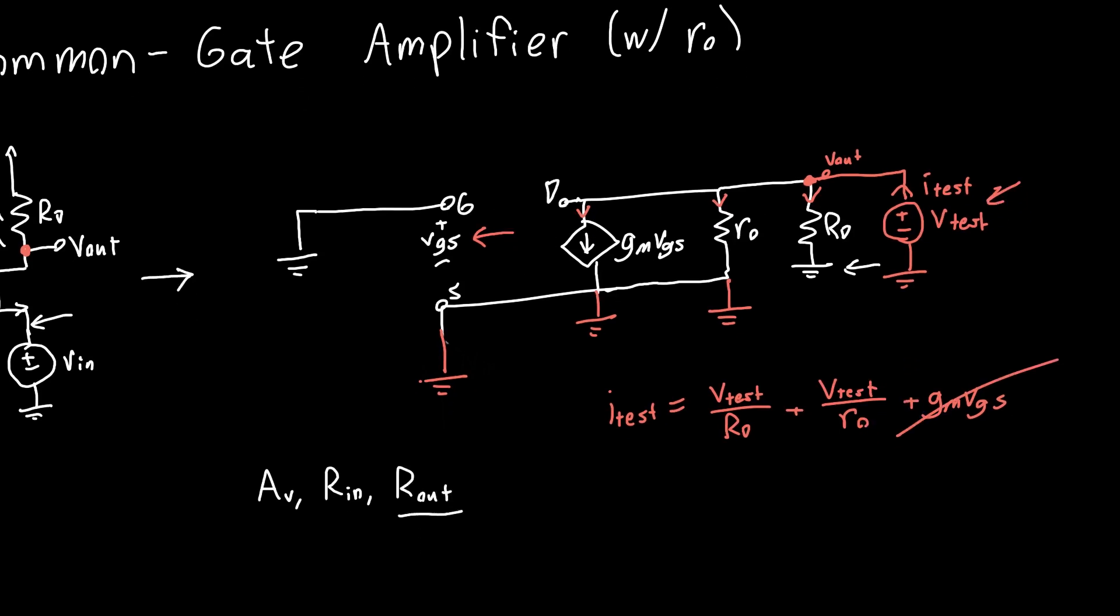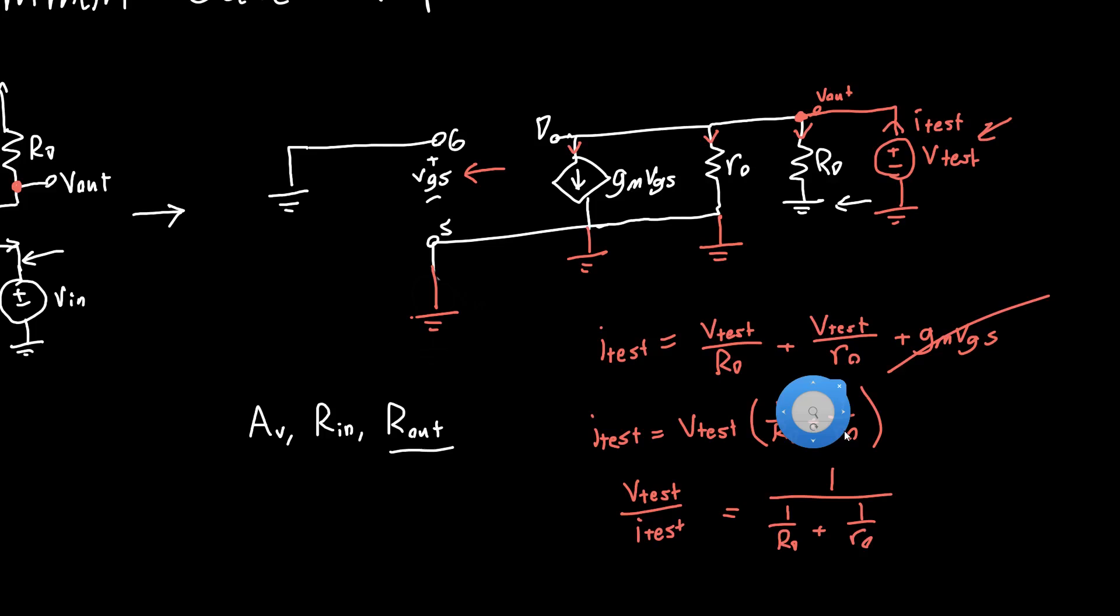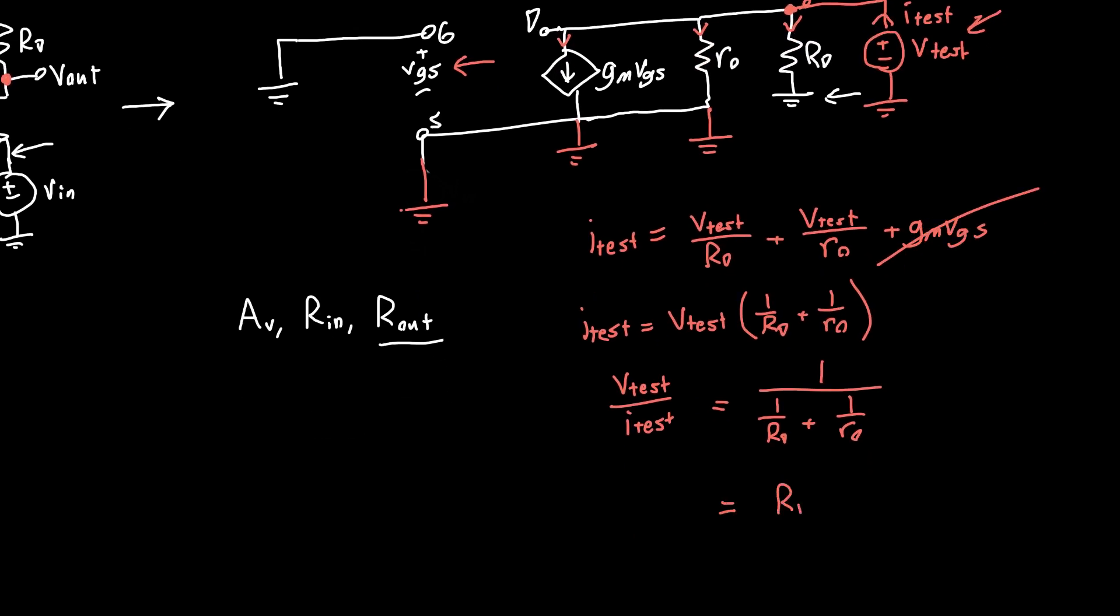But as before, we know that VGS is just zero, so this term will actually cancel out. If we regroup everything, I test is just equal to V test times 1 over RD plus 1 over RO, or V test over I test is equal to 1 over 1 over RD plus 1 over RO.